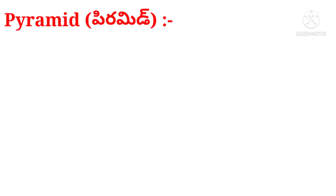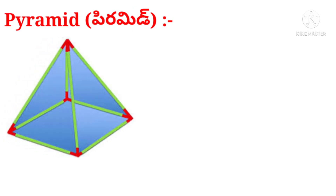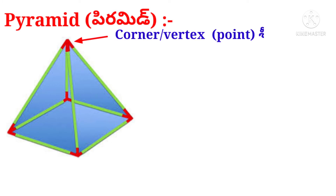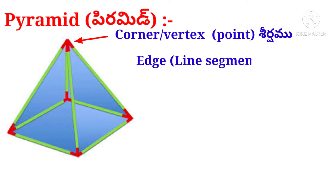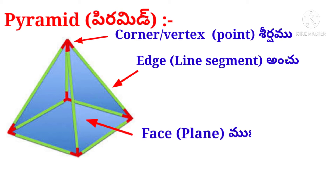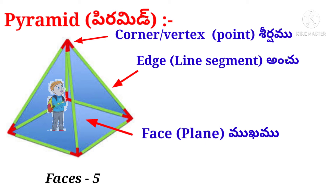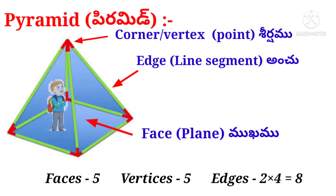Now let us observe the picture of a pyramid. The base is in the shape of a square and the side walls are triangular. There is a flooring but no ceiling. Suppose a boy entered a room in the shape of a pyramid. He observed four walls — four faces — and one flooring face: total five faces. He observed four corners in the flooring and one corner at the top — total five vertices. He observed four edges in the flooring and four edges joining the flooring corners to the top corner — total eight edges.